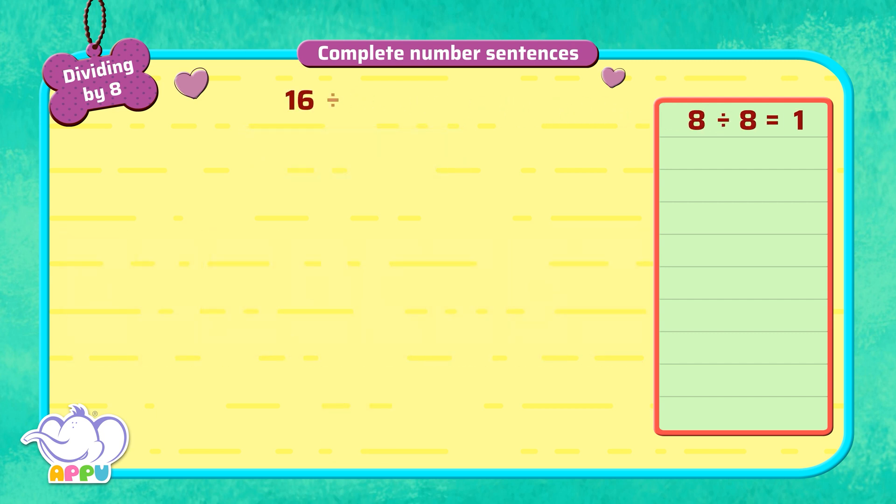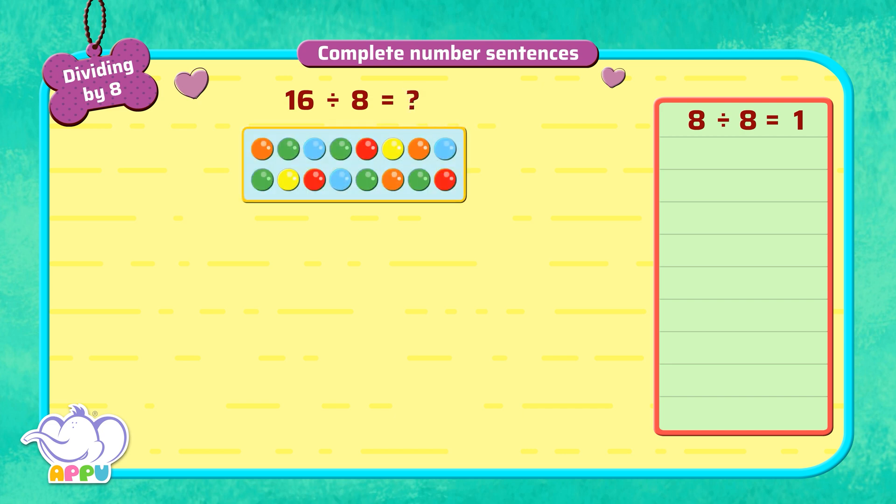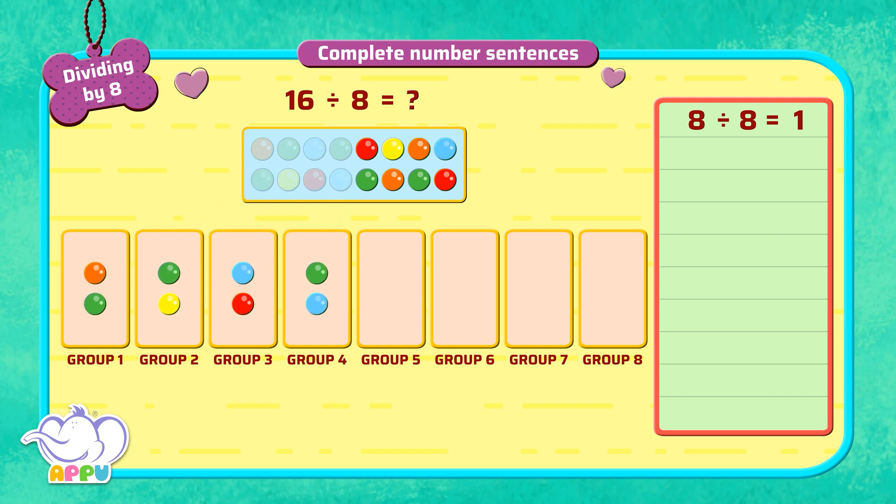What is 16 divided by 8? When we divide 16 beads equally into 8 groups, we get 2 beads in each group. So the answer is 2.